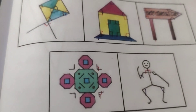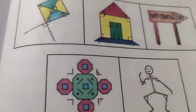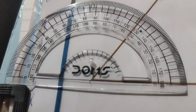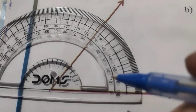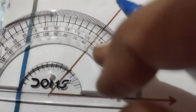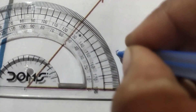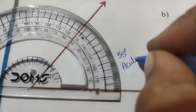Second question: measure the following angles and write the measurement and type of each angle. First angle: counting 10, 20, 30, 40, 50 — the angle measures 55 degrees. So this angle is an acute angle.